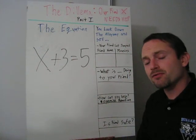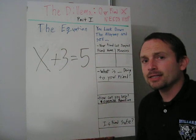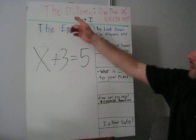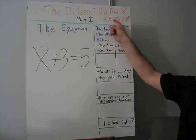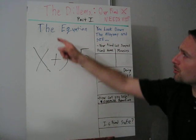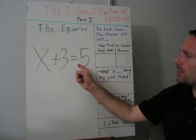Now, we've just learned about our friend, x, the variable. Now we're going to help him. The Dilemma, Part 1. Our friend, x, needs help. Here's the equation: x plus 3 equals 5.